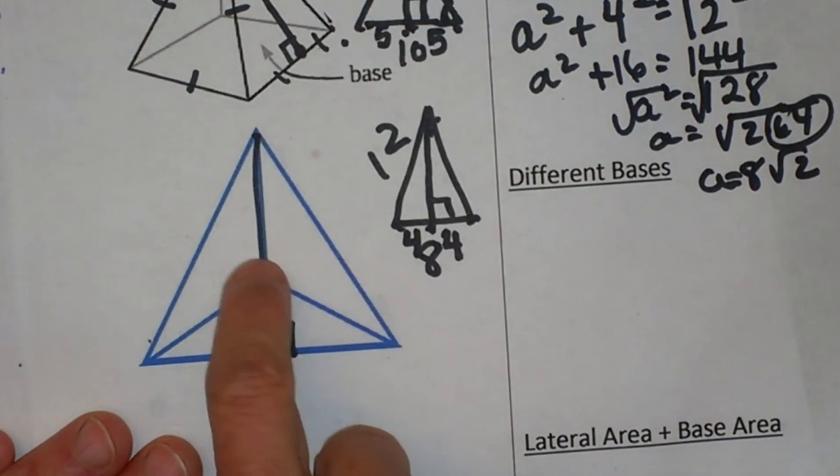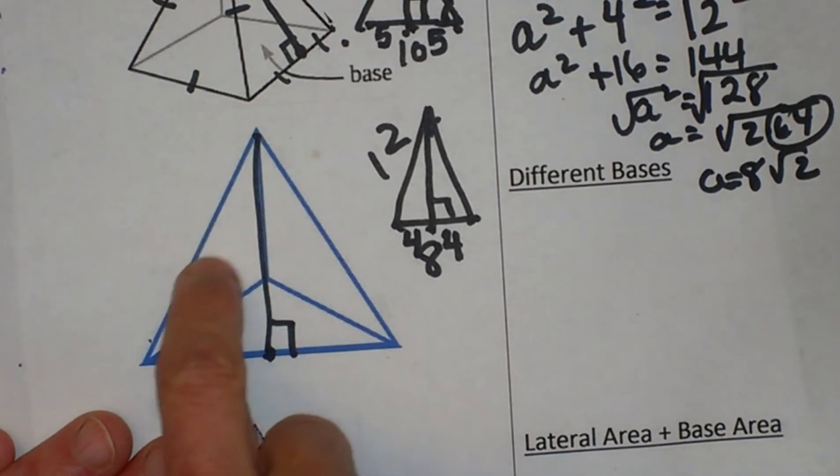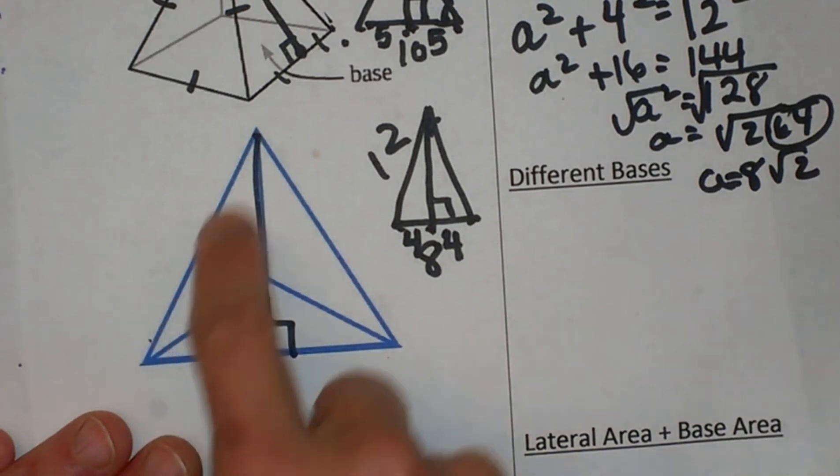And likewise, on a triangular pyramid we have three faces: one over here, one over here, and then this big one in the front.